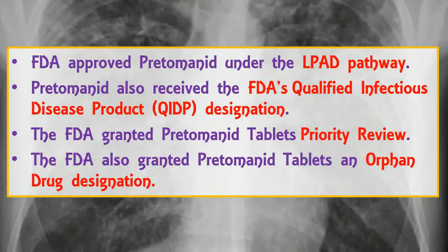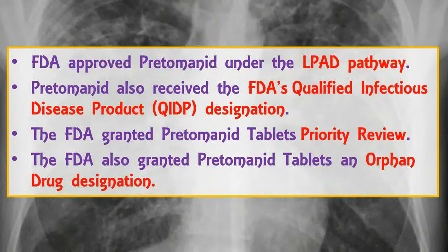As required under the LPAD pathway, labeling for pretomanid includes statements conveying that the drug has been shown to be safe and effective only for use in a limited population. Pretomanid also received the FDA's Qualified Infectious Disease Product (QIDP) designation, given to antibacterial and antifungal products intended to treat serious or life-threatening infections. The FDA granted pretomanid tablets priority review and an orphan drug designation, which provides incentives to assist and encourage the development of drugs for rare diseases.